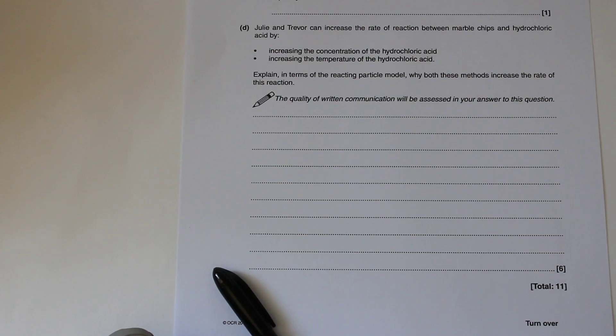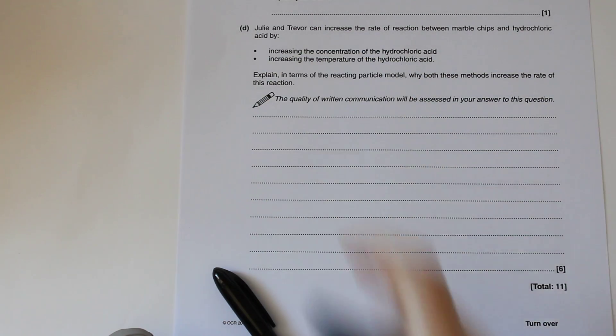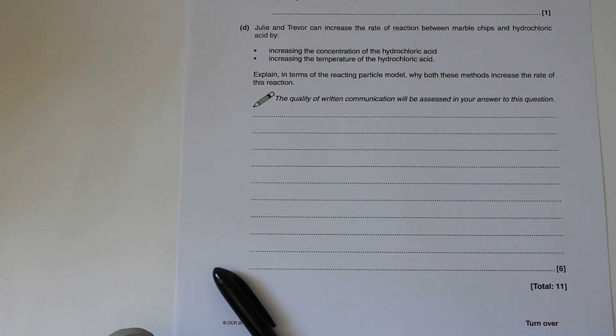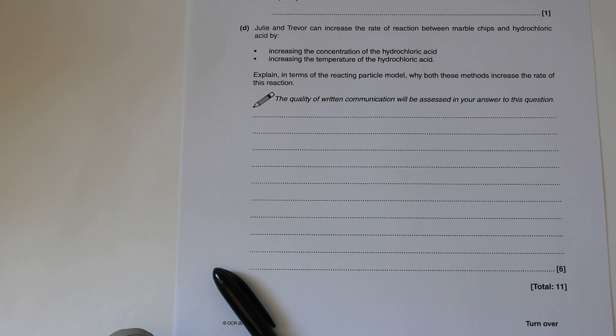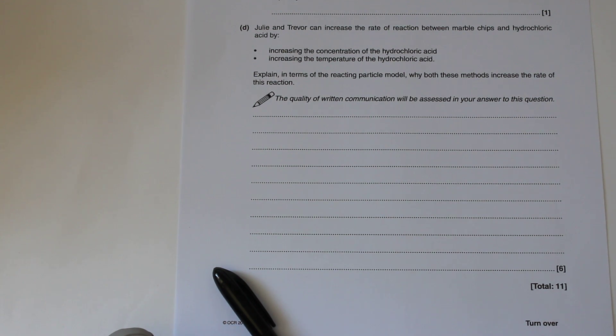So what we've got is section D here that we're looking at. Judy and Trevor can increase the rate of reaction between marble chips and hydrochloric acid by increasing the concentration of the hydrochloric acid and increasing the temperature of the hydrochloric acid. Explain in terms of the reacting particle model why both of these methods increase the rate of this reaction.